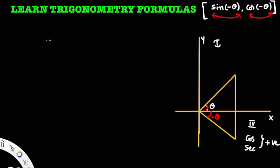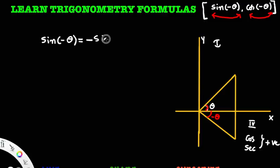Now, sine of minus theta — minus theta lies in the fourth quadrant. In the fourth quadrant, sine is negative, so sine of minus theta is minus sine theta. I am not giving full details here; this class is all about learning and revising the formulas.